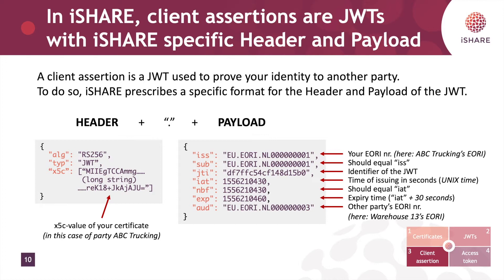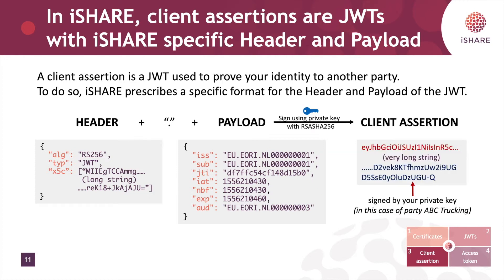So to summarize, here we have a client assertion that is issued by ABC Trucking to prove his identity to Warehouse 13. To prove that ABC Trucking is actually the one that wrote this client assertion with specifically this header and payload, he will sign it using his own private key. Warehouse 13 will then be able to use the x5c value to verify that. So ABC Trucking signs this using the private key with the algorithm RSA SHA256, creating the client assertion: the header base64 encoded, joined by a dot, then the payload base64 encoded, joined by a dot, and then the signature created by the RSA SHA256 algorithm.